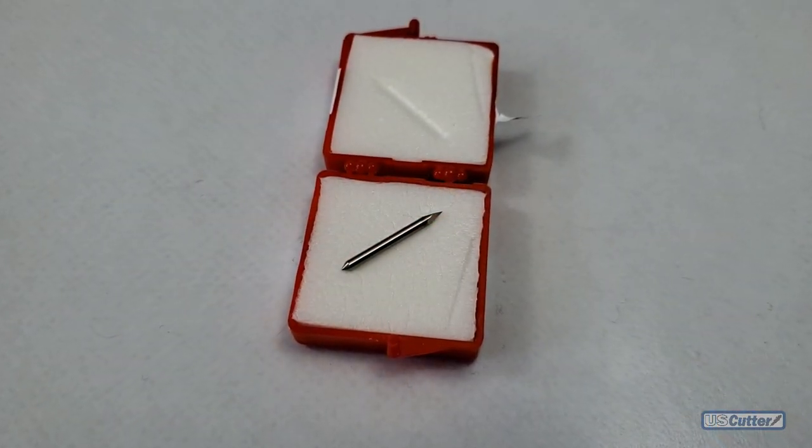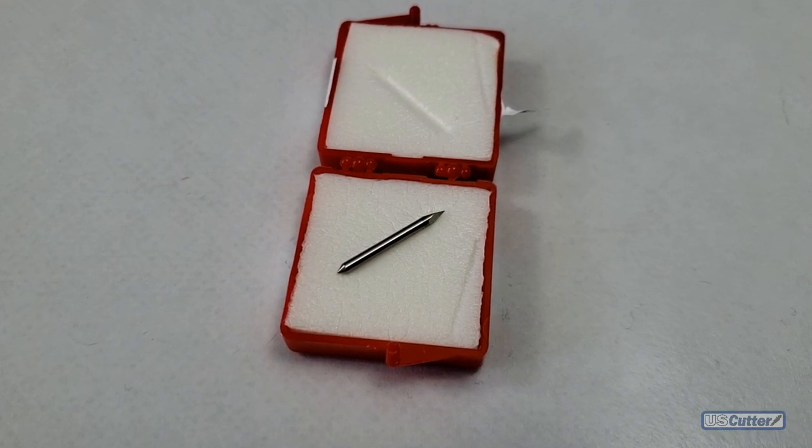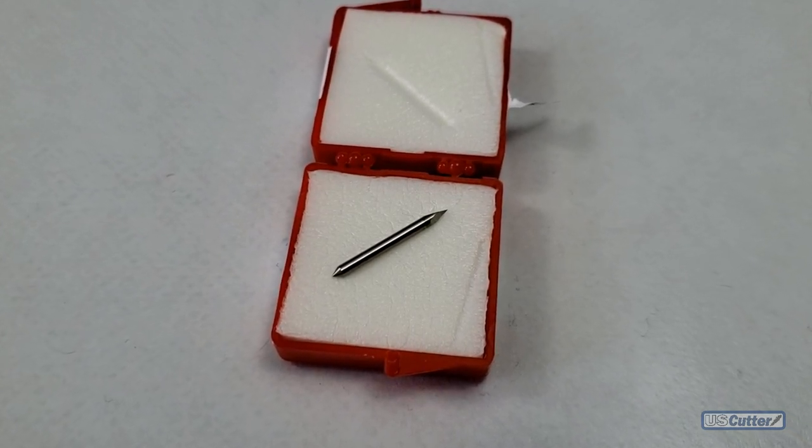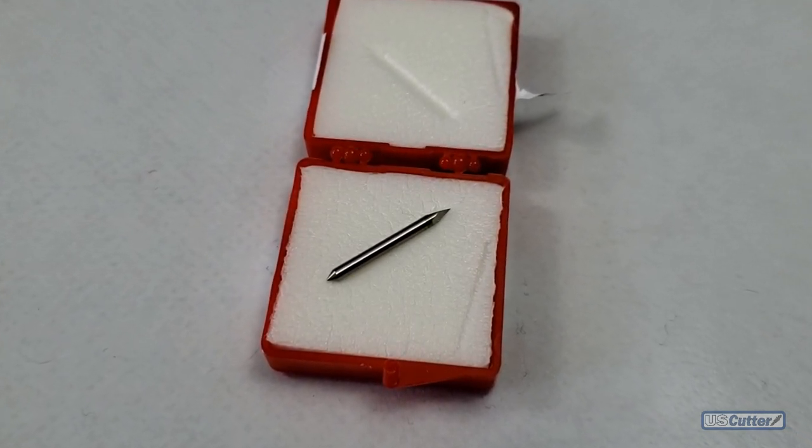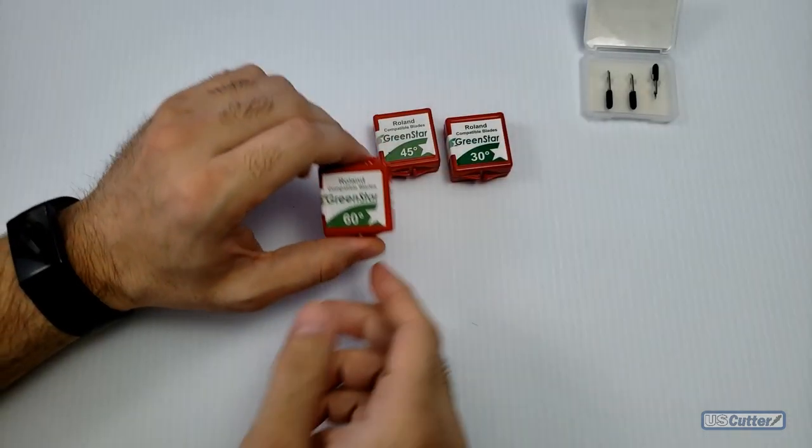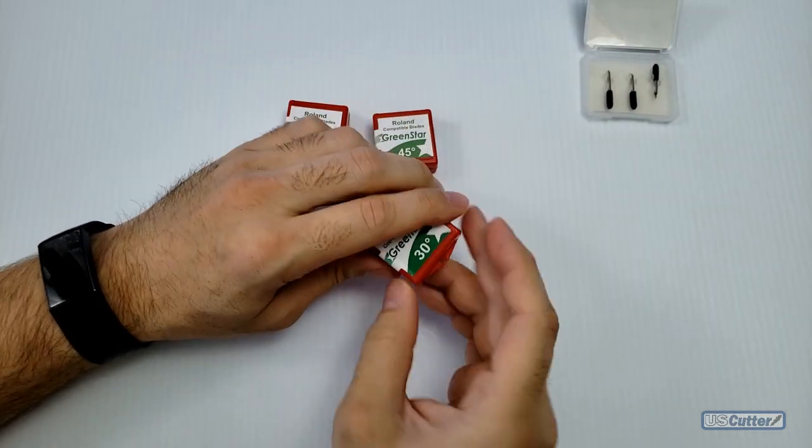Finally, let's talk about these premium blades. We've got the Green Star premium blades that I've shown in here, and then we have the Clean Cut premium blades. The Green Star premium blades only come in standard sizes like 30 degree, 45 degree, and 60 degree blade sets.